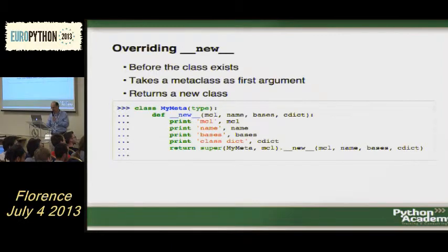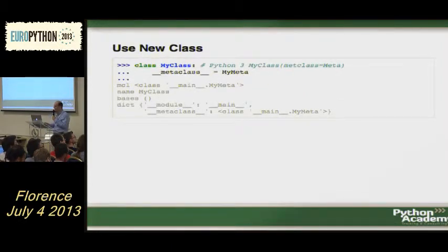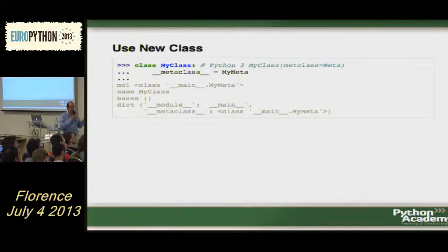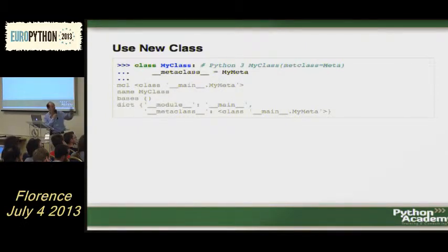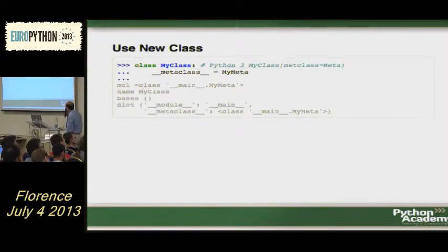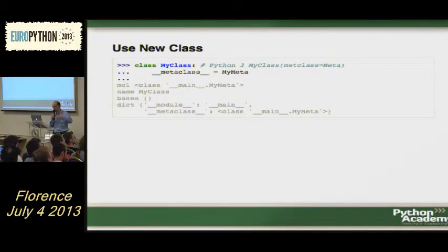__init__ looks very similar. The only difference is that instead of the metaclass, the first argument you get is the class — because __new__ was already called and the class exists. With __init__ you normally don't have a return, whereas with __new__ the return is the new class you generate. I would favor using __init__ because the class already exists and you don't do as much.